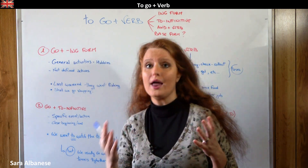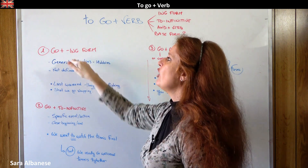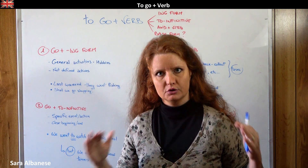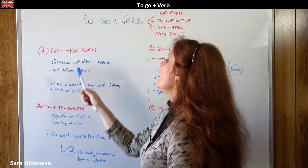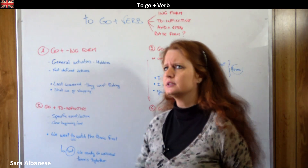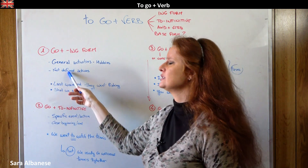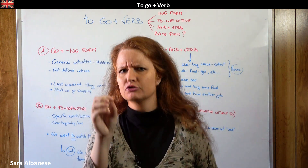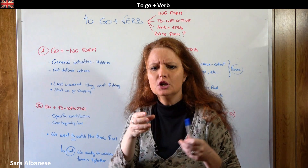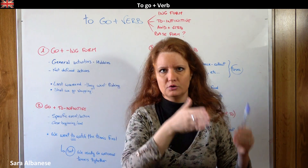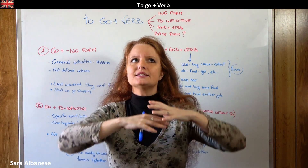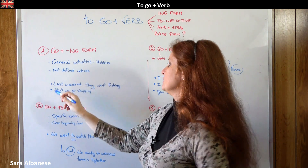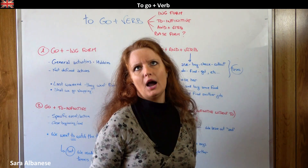So the first one: 'go' followed by the -ing form, as in 'I go doing something.' This is absolutely correct and should be used for general activities — hobbies or activities in general that are not defined. By not defined, I mean they're not a specific event or a specific moment. For example: last weekend they went fishing.